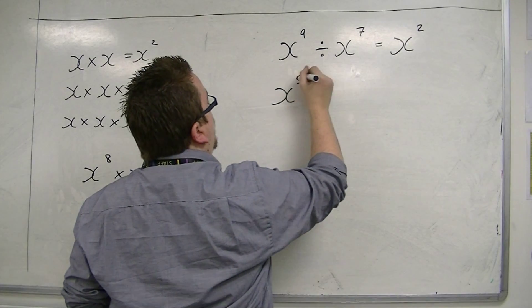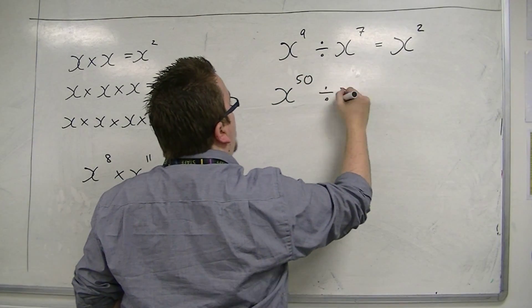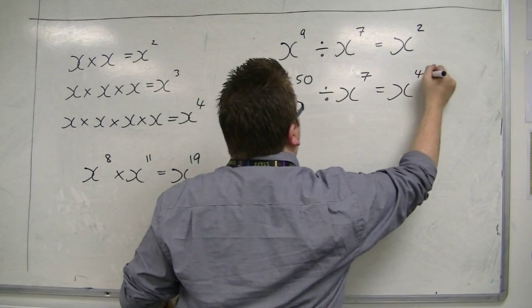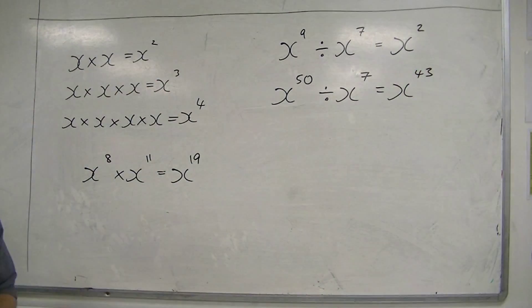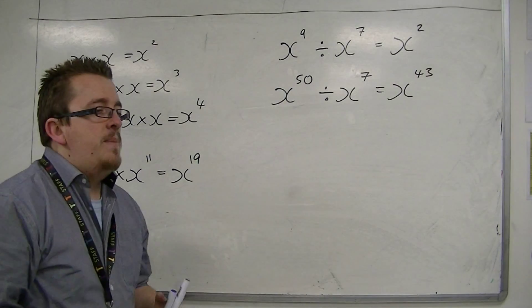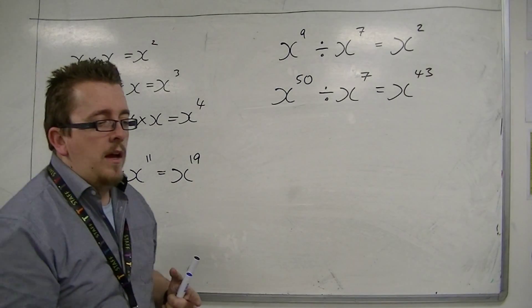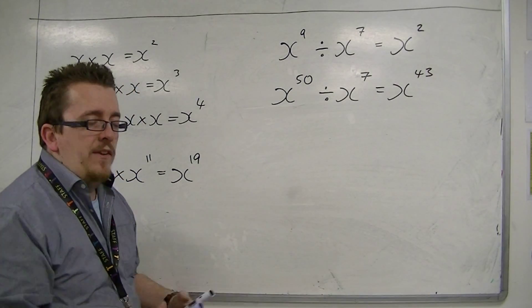If I had x to the power of 50 divided by x to the power of 7, then this would be x to the power of 43. So you might be thinking, well, why is that?